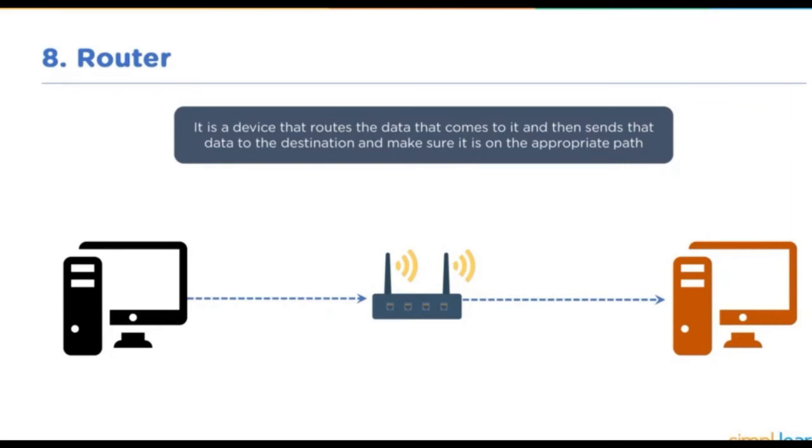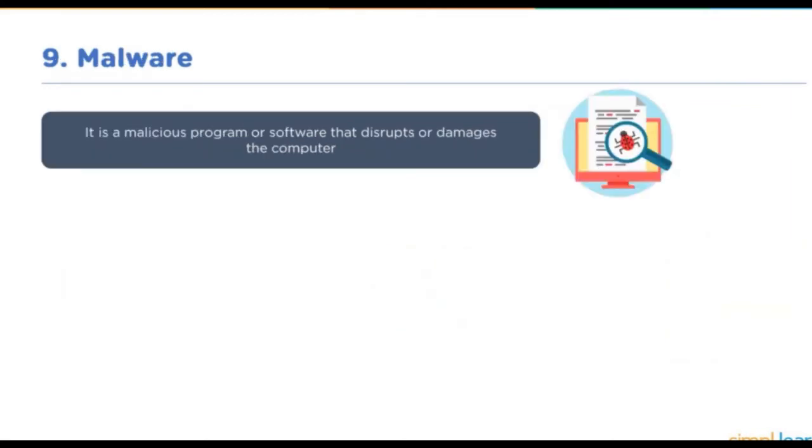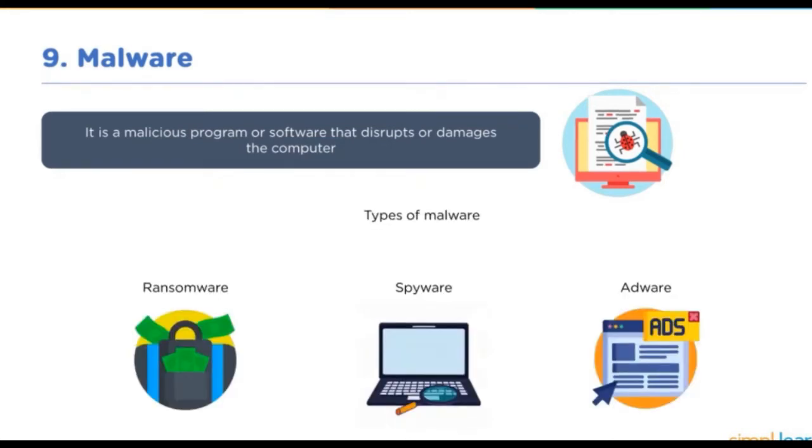Malware, or malicious software, is any program or file that is intentionally designed to disrupt or damage a computer system. Types of malware can include a wide range of concepts including virus, ransomware, worms, trojans, rootkits, keyloggers, adware, spyware, bots, remote access trojan, logic bombs, and backdoors.